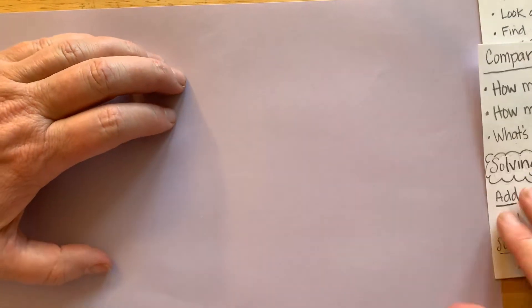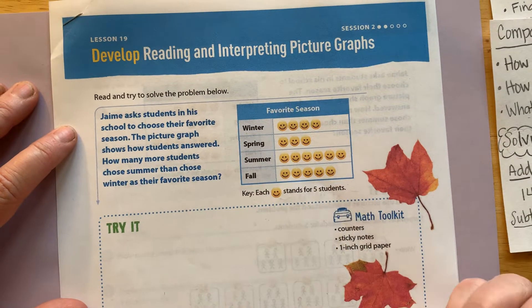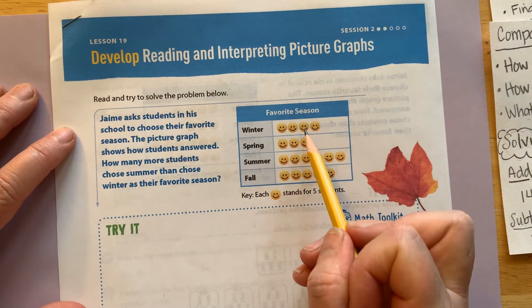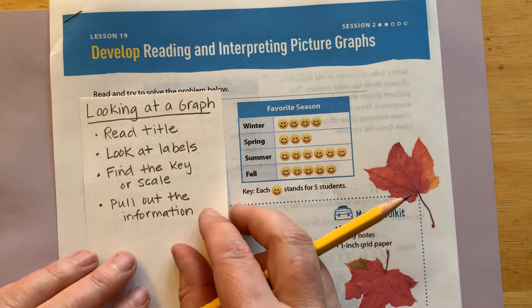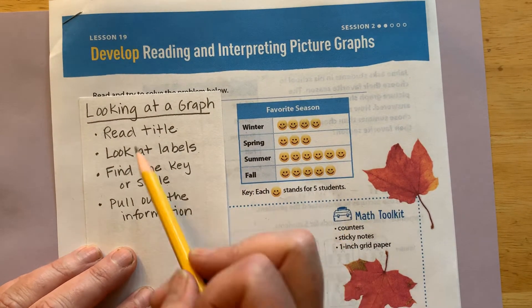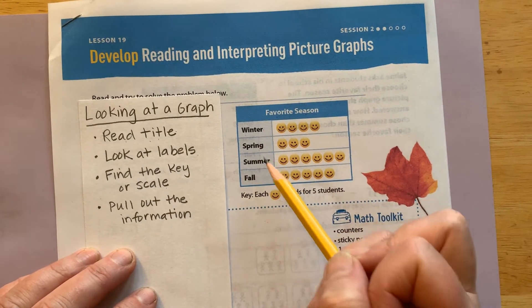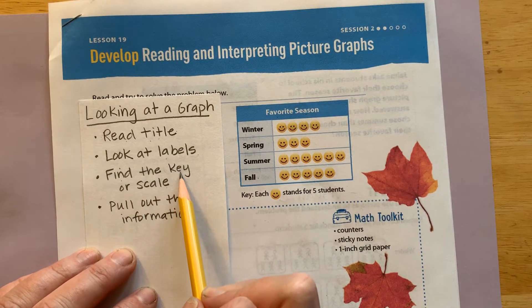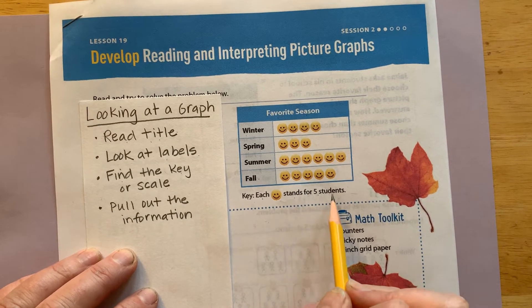Okay, let's go ahead and start with our graph for today. What kind of graph is this? What do you notice? That's right — it's a picture graph, because it's using smiley faces. Remember, when we're looking at a graph, before we get started, we want to find some information first. Let's read the title: Favorite Season — like winter, spring, summer, fall. We found the labels. Now find the key. The key says each smiley face stands for five students.